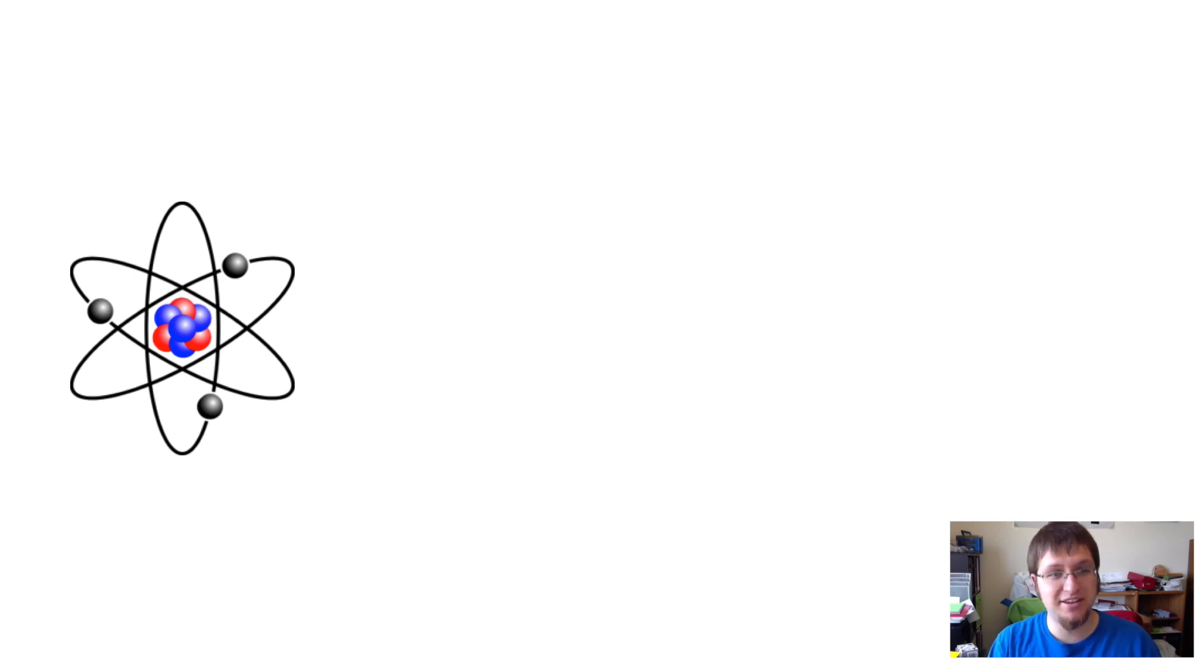Atoms are really complicated things. When most people think of atoms, they think of this picture on the left. There's protons, neutrons, and electrons that are floating around. Now, we've got to keep in mind, things are more complicated than this.